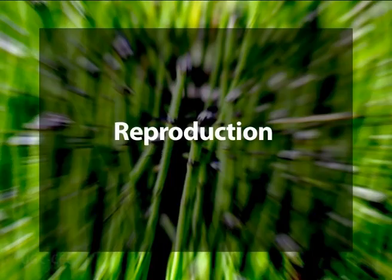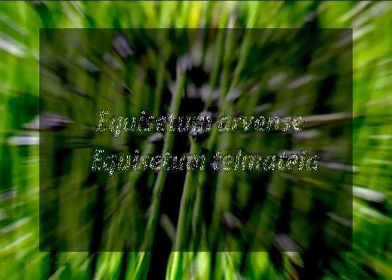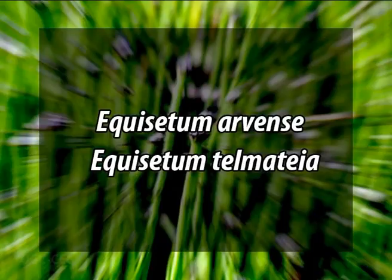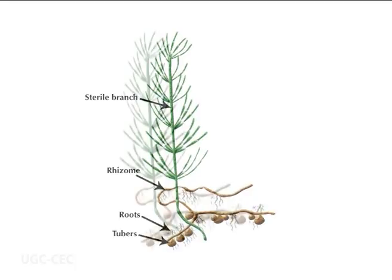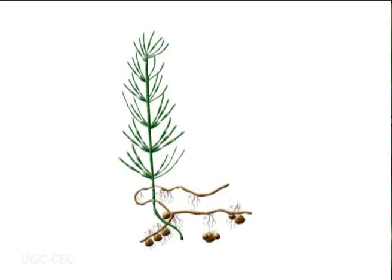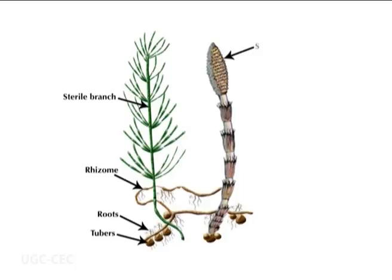Now we will discuss the reproduction in case of Equisetum. Equisetum reproduces by vegetative as well as asexual methods. For vegetative reproduction, the underground rhizome of some species of Equisetum, for example Equisetum arvense and Equisetum telmateia, forms tubers which help in vegetative propagation. These tubers develop due to irregular growth of some branch buds at the nodes of the rhizome. They are oval-shaped in case of Equisetum arvense or pear-shaped in case of Equisetum telmateia. After their detachment from the parent plant, the tubers remain in the soil and on the return of favorable conditions, they grow into new plant bodies.